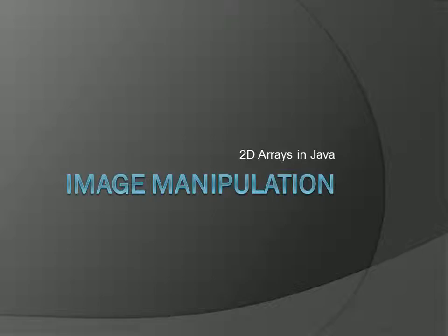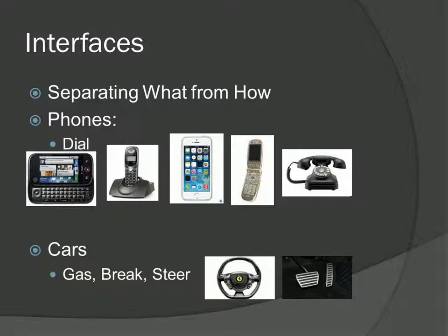Today we're going to move from the matrix class and take a look at actually manipulating an image. Before we do that, we're going to use a few interfaces in this code. The punchline is they give us a way of separating what from how — we can specify what we need before we have to know how it's going to be done.